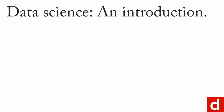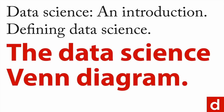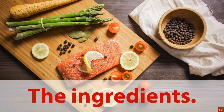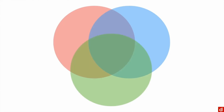We'll continue defining data science by looking at the data science Venn diagram — what are the ingredients of data science. Thanks to Drew Conway, who came up with this. He said data science is made of three things represented as overlapping circles, because it's the intersection that's important.